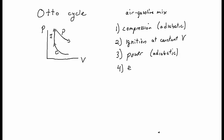We allow the gas to expand adiabatically — that is, quickly. The fourth step is called the exhaust step. And this is actually kind of cheating, because we're not actually taking the gas and cooling it, but instead we're tossing out the old air-gasoline mix, which we can't use anymore because the gasoline is already used up, and we replace it with cooler, fresh air-gasoline mixture.